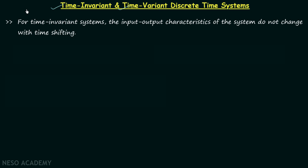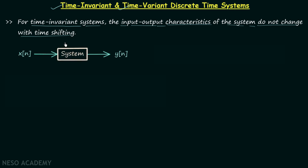We will begin our discussion by understanding what time invariant and time variant discrete time systems are. For time invariant systems, the input-output characteristics of the system do not change with time shifting. So whenever you have a discrete time system that is time invariant in nature, if you perform time shifting on the input, you will have the same type of shifting in the output.